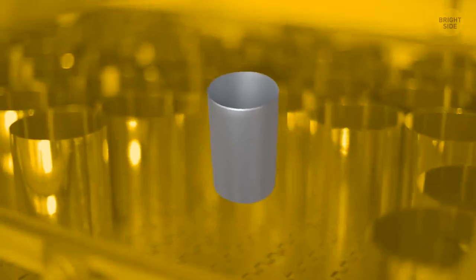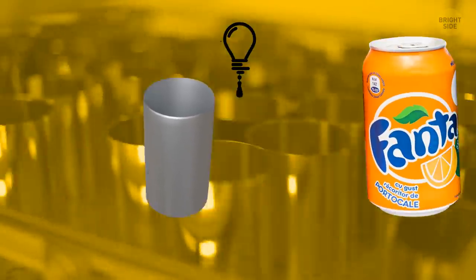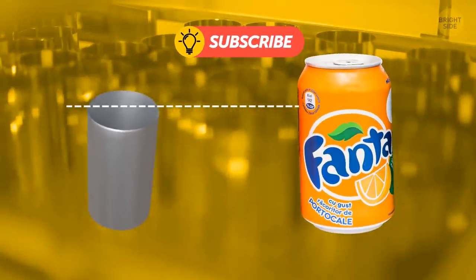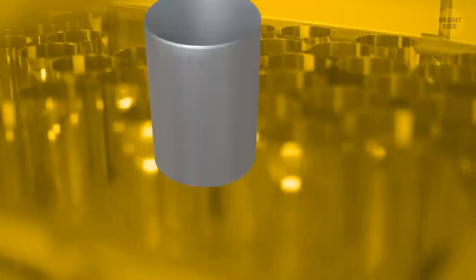A bit more effort, and that's the diameter you need. But it's still too short. The next step is to make the walls a bit thinner. The extra aluminum from the sides will add up to the height of the cup.